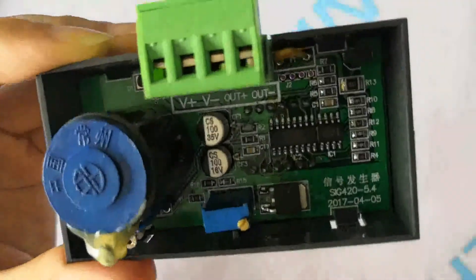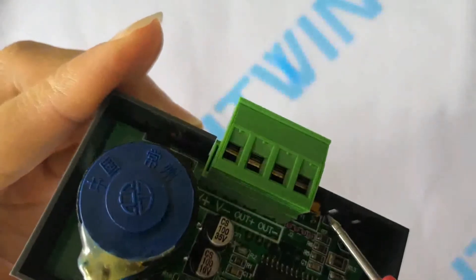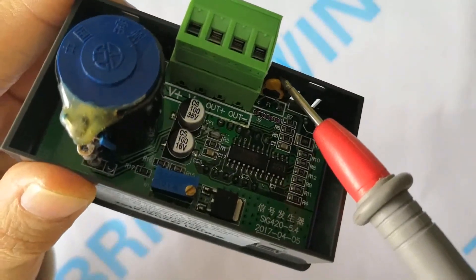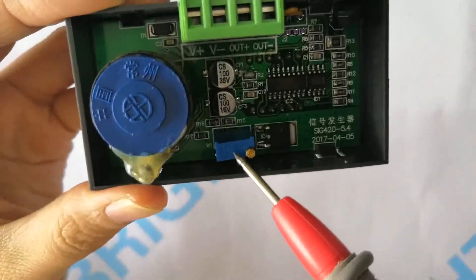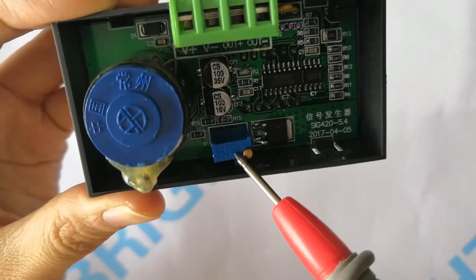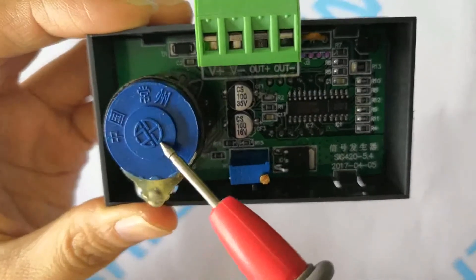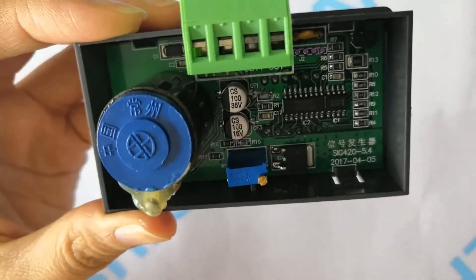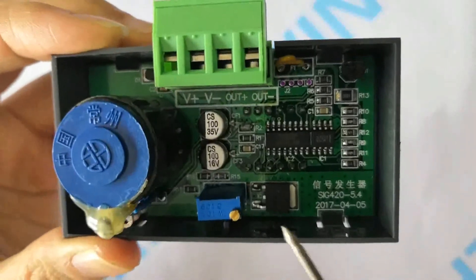Here we have the polarity reverse protection fuse, accuracy adjusting potentiometer, and output adjusting potentiometer. Look at the back refined circuits.